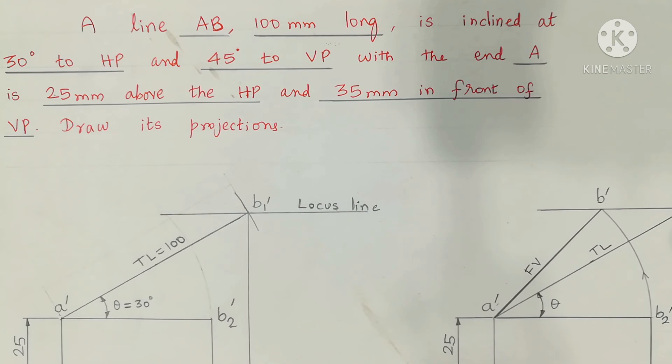Welcome to projections of straight lines. Please read the question: A line AB 100mm long is inclined at 30 degrees to HP and 45 degrees to VP with the end A at 25mm above the HP and 35mm in front of VP. Draw its projections. We are going to draw the final front view and final top view for the given straight line AB.